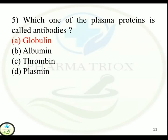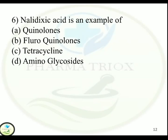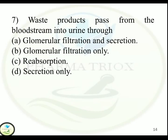Question 6: Nalidixic acid is an example of — Option A: Quinolones. Option B: Fluoroquinolones. Option C: Tetracycline. Option D: Aminoglycosides. Correct answer is Option A — Quinolones.